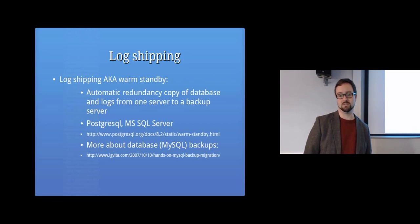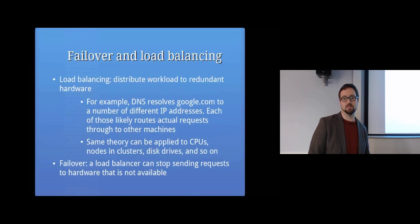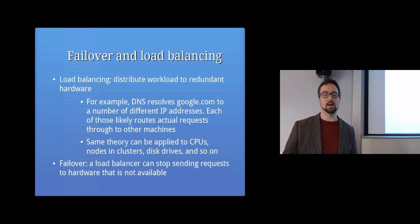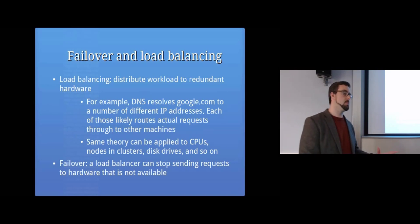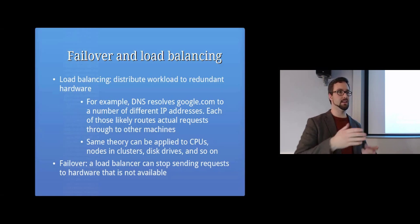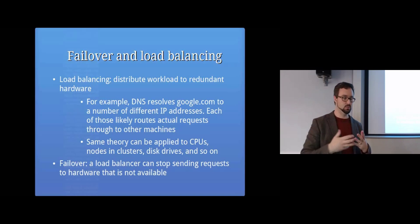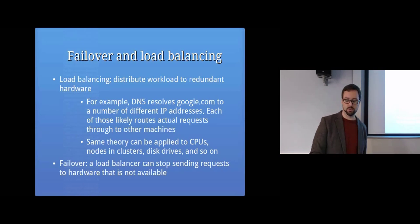You need to monitor logs for disk failures. Log shipping is like a warm standby where you make copies of databases to a backup server. Load balancing is where you distribute workload across multiple devices or computers - for example, DNS for Google might have multiple IP addresses each pointing to separate servers or load balancers. A failover is when something stops working - if you've got a load balancer and one server dies, it can fail over to a separate server and stop sending requests to the one that's not working.